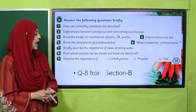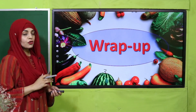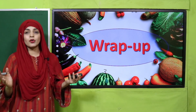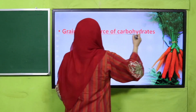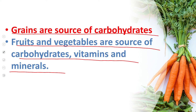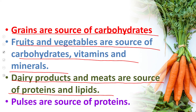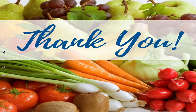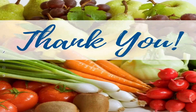My dear students, quickly note down your homework. Go to page number 50 and do question number 8 from section B. Today we learned that grains are sources of carbohydrates; fruits and vegetables are sources of carbohydrates, vitamins, and minerals; dairy products and meat are sources of proteins and lipids; and pulses are sources of proteins. Have a good day — Allah Hafiz!